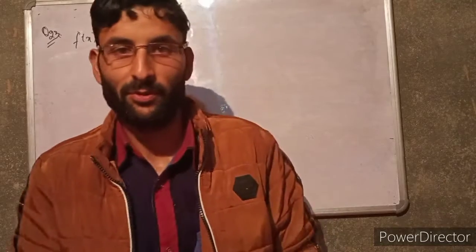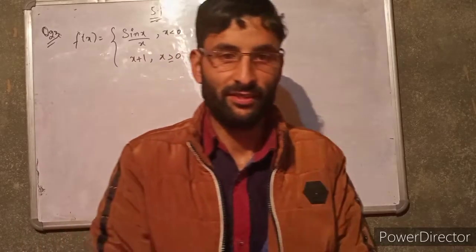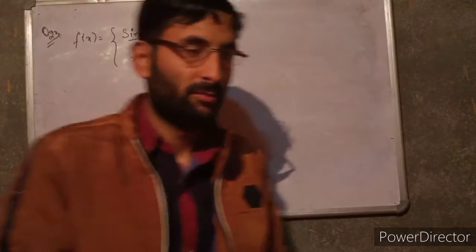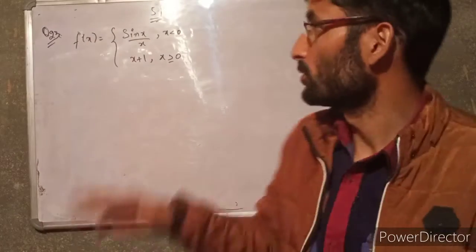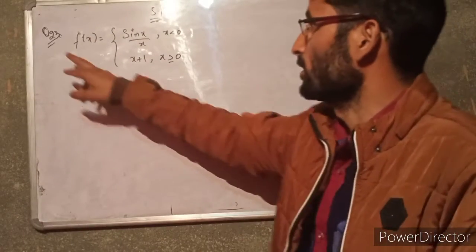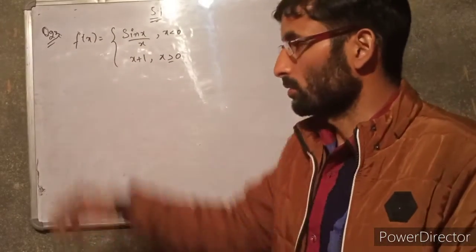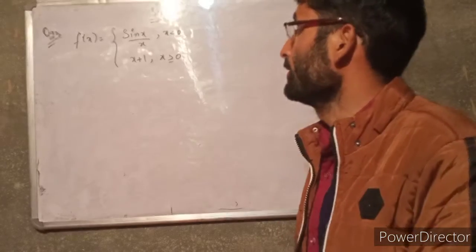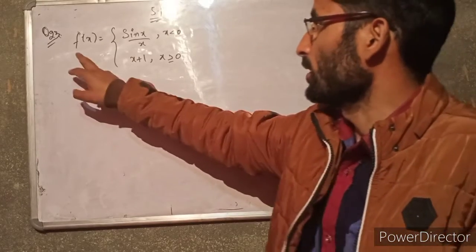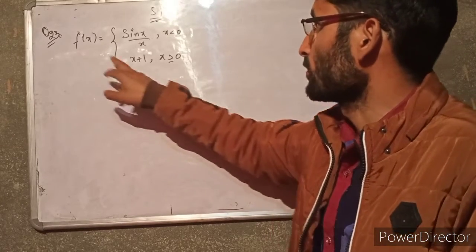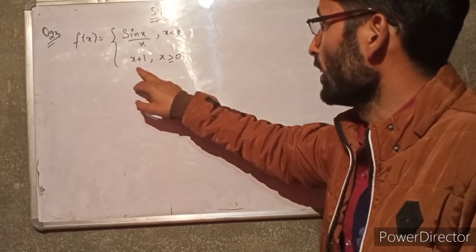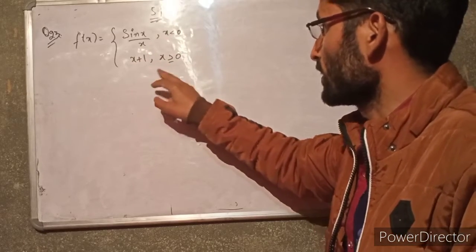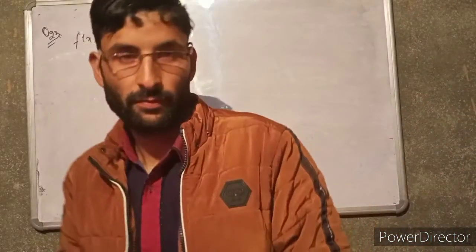Assalamu alaikum students, I am Omar Bashir. Today we are going to take a class on NCRT Mathematics, which is 5.1. We will answer question 23. The question is: f of x is equal to sin x divided by x when x is less than 0, and x plus 1 when x is greater than or equal to 0.